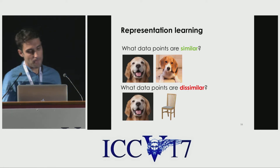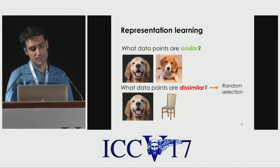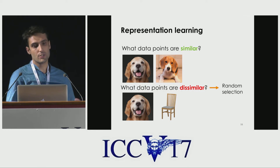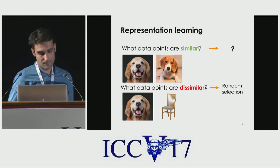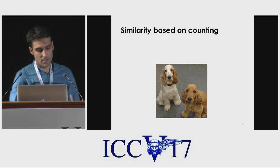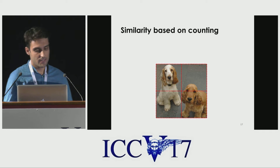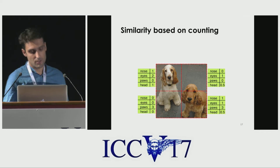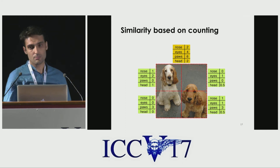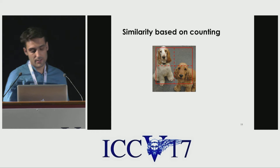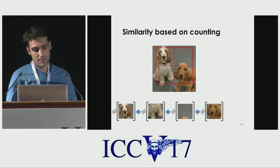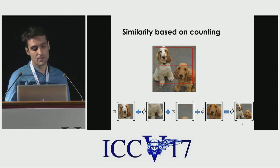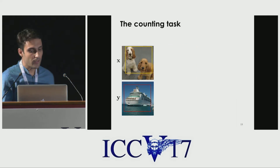Can we answer these questions automatically? Answering the dissimilarity question seems easy — if I take two random images, they most likely do not share the same semantic content. For similarity, we define it based on counting: if I take an image, divide it into tiles, count some visual primitives, and sum them up, it should match the number of visual primitives on the original image. More precisely, we want to learn a function phi that maps our data to a space where the sum of the tiles equals the representation of the original image. We call this the counting task.